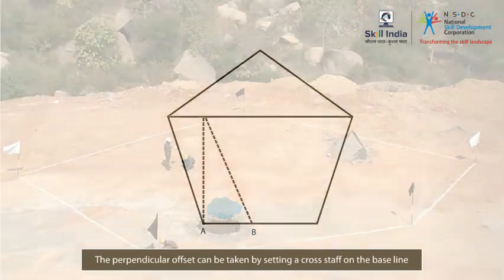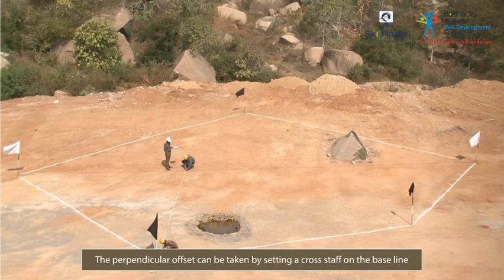The perpendicular offset to A can be taken at A by setting a cross staff at the baseline directly opposite it and then running a chain or tape to it.